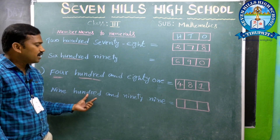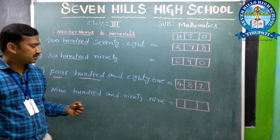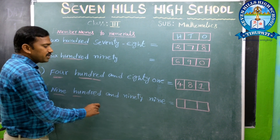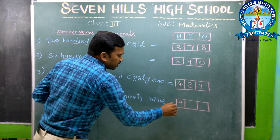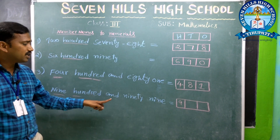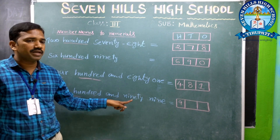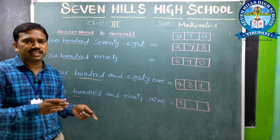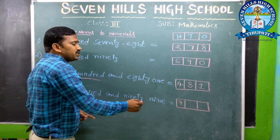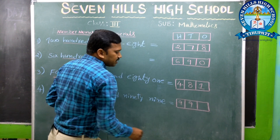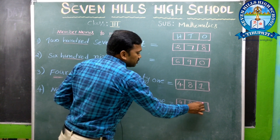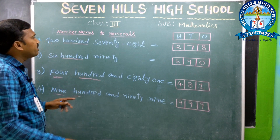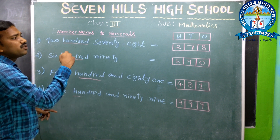Next, 999. How many hundreds are there? 9. In the 100s place, write 9. And 99 — 90 means 9 tens, so in the 10s place write 9. And in the 1s place it is 9. So it is 999. This is the way to write number names to numerals.